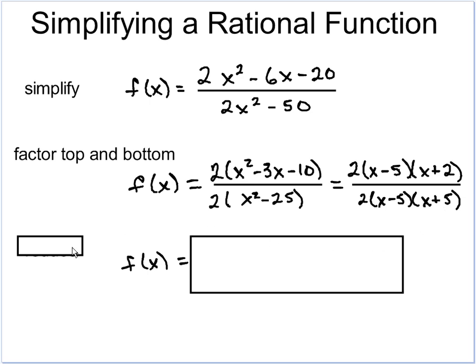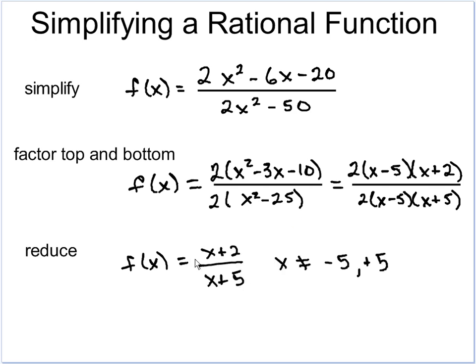Now, just like we do with our fractions, we're going to reduce that function. As you can see, the 2's will be able to cancel out and the x minus 5's will also be able to cancel out. So when we put this down, I'm left with x plus 2 over x plus 5.